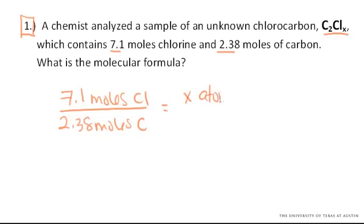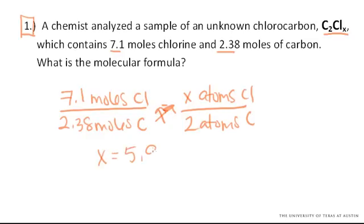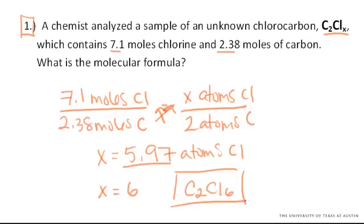So, X atoms of Cl for every 2 atoms of carbon. When you cross multiply and solve for X, you find that X equals 5.97 atoms of chlorine. Well, you can't have 5.97 atoms, but you can round up to 6. And so, our chemical formula must be C2Cl6. And that is the answer to question one.